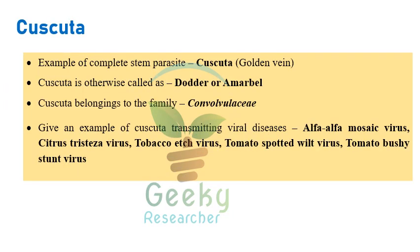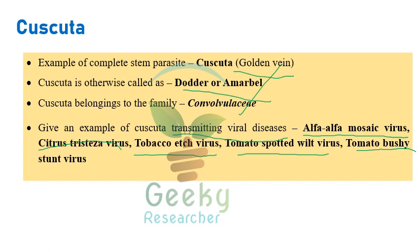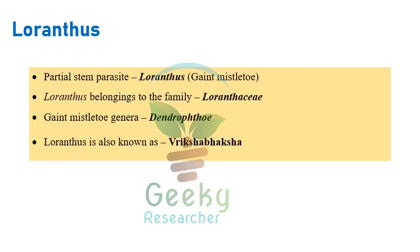Cascuta, the complete stem parasite, also called golden vine, dodder, and Amarbell, belongs to family Convolvulaceae. Cascuta also acts as a vector transmitting viral diseases including alfalfa mosaic virus, citrus tristeza virus, tobacco ringspot virus, tomato spotted wilt virus, and tomato bushy stunt virus.